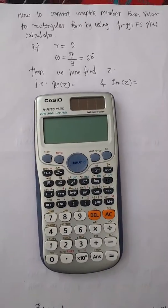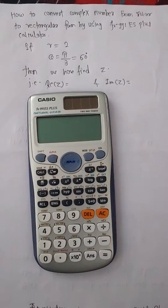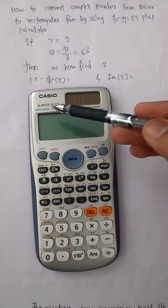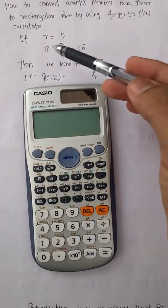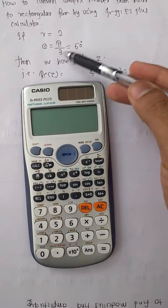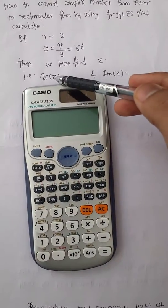Hi, in this video I am going to explain how to convert a complex number from polar to rectangular form by using FX-991ES Plus calculator. If our R is equal to 2 and theta is equal to π/3, that is 60 degrees, then we have to find the Z, that is the real part of the Z and imaginary part of the Z.